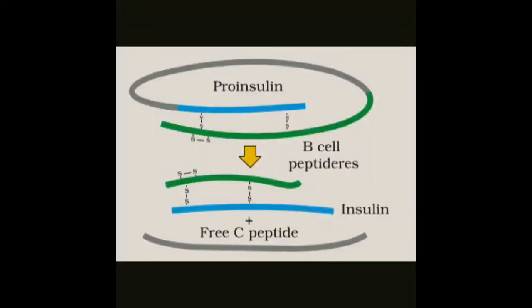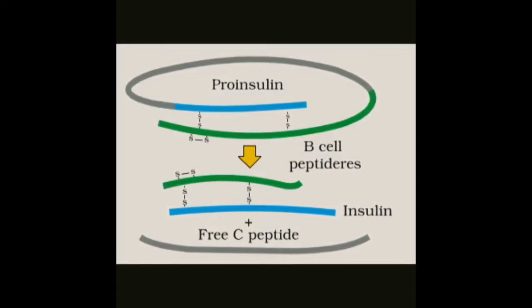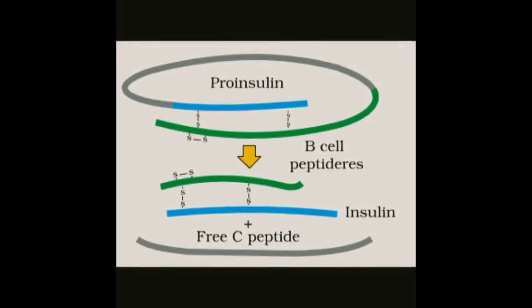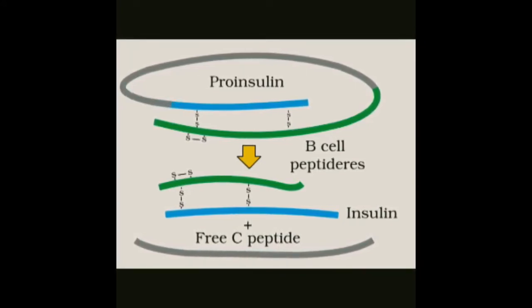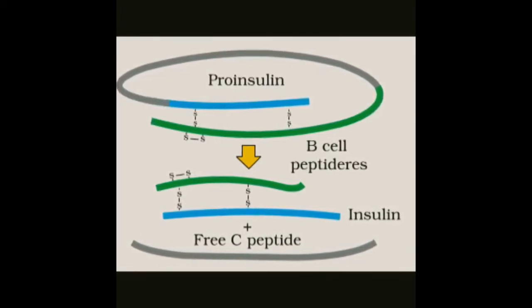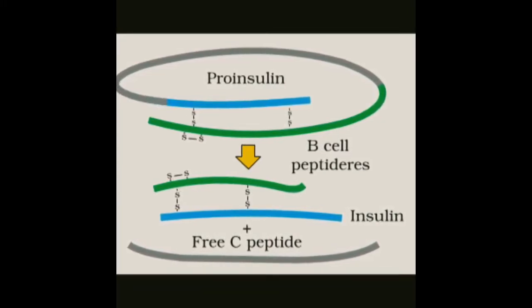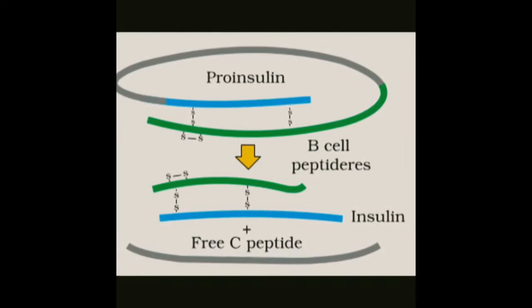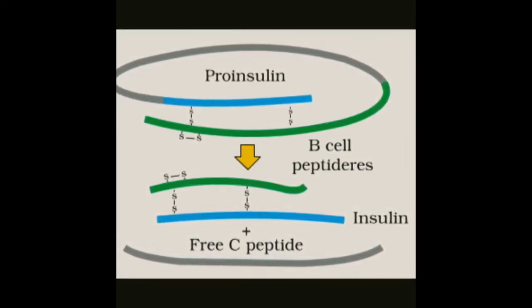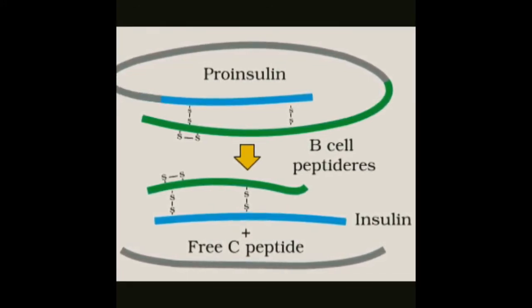This image shows the maturation of pro-insulin into insulin. The blue chain is the A chain and the green chain is the B chain — both are short polypeptide chains. The grey chain is an extra stretch not needed in mature insulin. During maturation, the grey chain is removed and the green and blue chains are linked together by disulfide bridges, forming mature insulin.